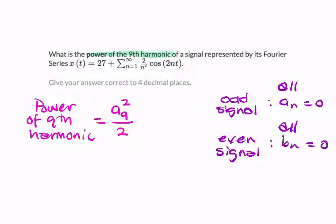So the answer to this question, you'd simply have to find a9. And a9 is 2 over n squared. So the answer would be half times 2 over 9 squared squared. Calculate that to four decimal places.